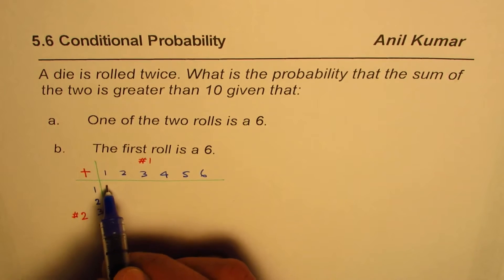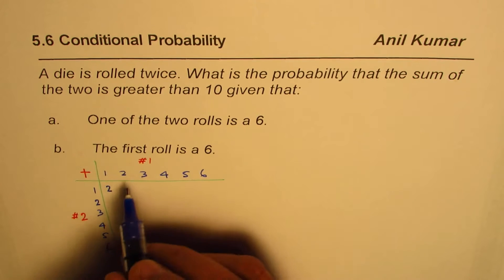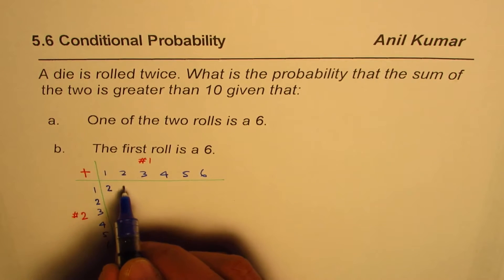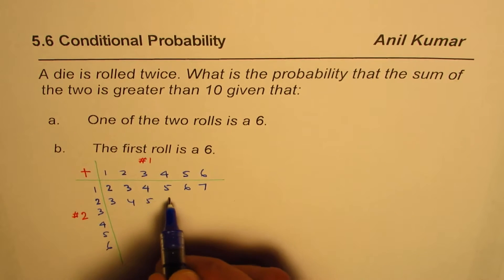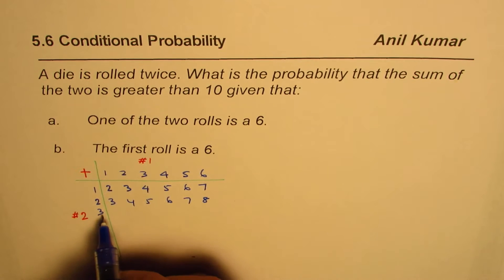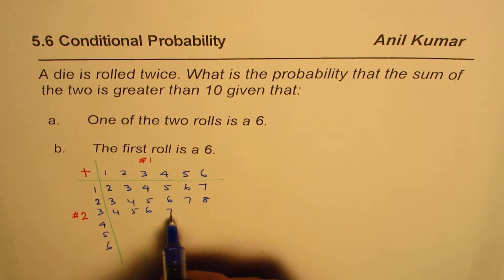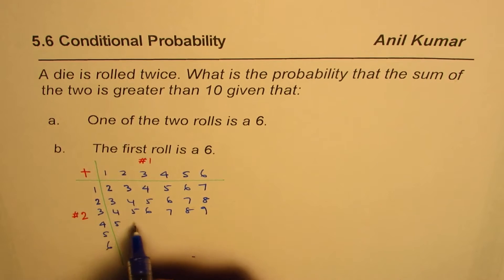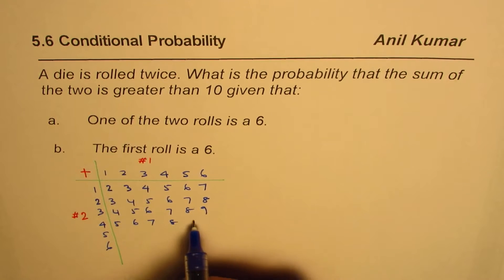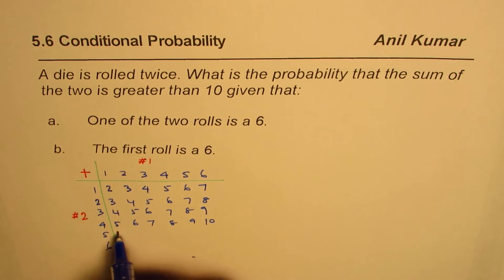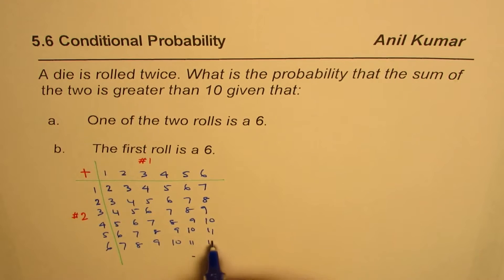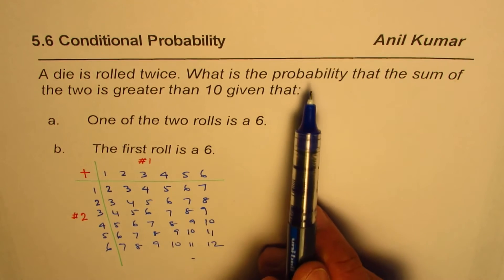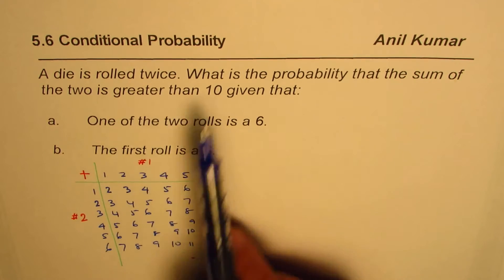Filling in the table: 1+1=2, and similarly for all combinations. The rows give us sums: 2, 3, 4, 5, 6, 7; then 3, 4, 5, 6, 7, 8; then 4, 5, 6, 7, 8, 9; then 5, 6, 7, 8, 9, 10; then 6, 7, 8, 9, 10, 11; and finally 7, 8, 9, 10, 11, 12.